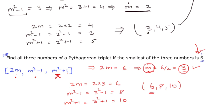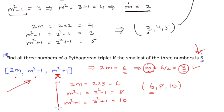In summary, the general method for finding a Pythagorean triplet when given one of the numbers is to equate that given number to one of the three expressions — 2m, m squared minus 1, or m squared plus 1 — and solve it until you get your solution. This is the method for Pythagorean triplets.